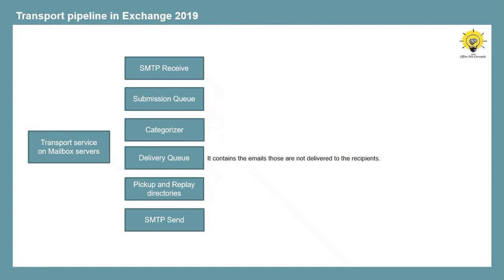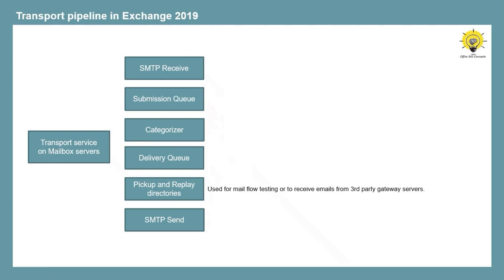The next component is the delivery queue, which contains emails that have not been delivered to recipients for any reason, such as recipient not found, transport service not available, or any other reason. The pickup and replay directories are also components of transport service: the pickup directory is used by administrators for mail flow testing or by applications that create and submit their own emails, and the replay directory receives messages from third-party gateway servers and can resubmit emails exported from Exchange Server queues. The last component is SMTP Send, which is used to send emails to recipients — whether on the same mailbox server, a different mailbox server in the same database availability group, or on the internet.